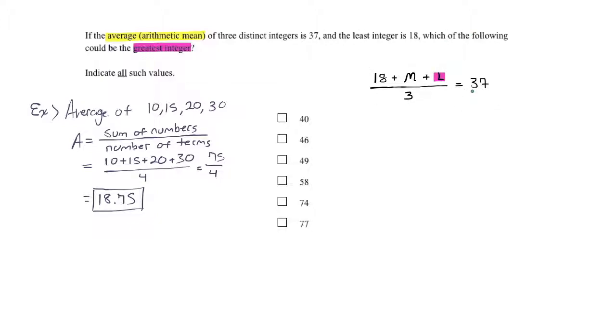So how do you do the algebra on this? I will put this 37 over 1 as I can, and I will cross multiply to start simplifying things down. Cross multiplying is usually a thing that people are okay with at a lot of different levels of math. 1 times 18 plus M plus L is 18 plus M plus L, and 3 times 37 is 111.